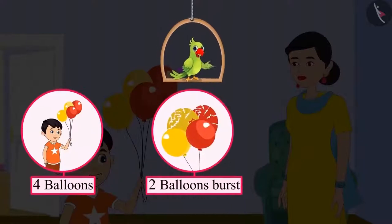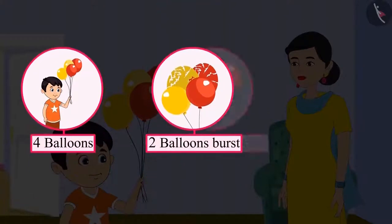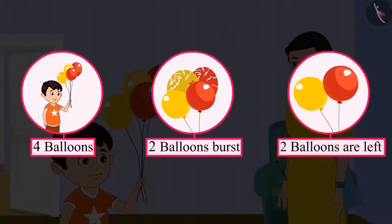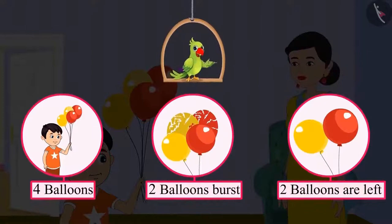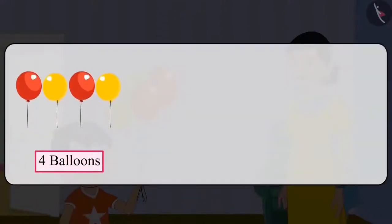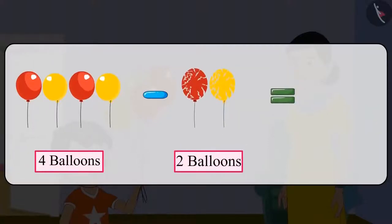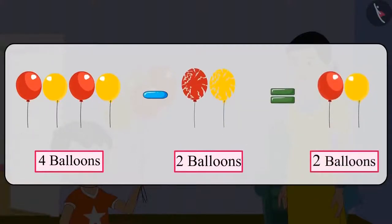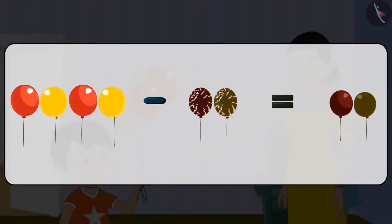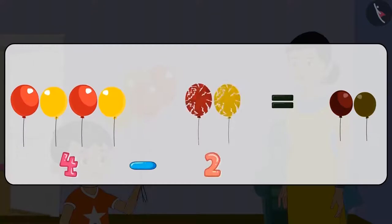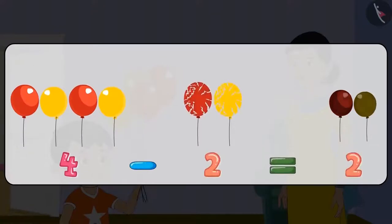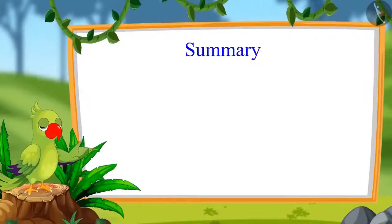So now, if out of these four balloons two balloons burst, then how many balloons are left? Yes, two balloons. Can you also write this in a systematic way? On subtracting two from four, two are left. Four minus two equals two. Did you have fun subtracting the number of balloons?